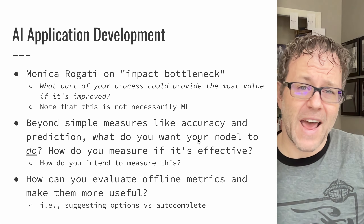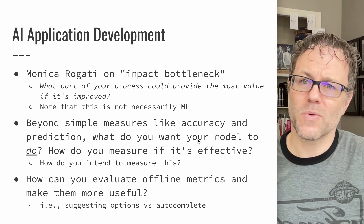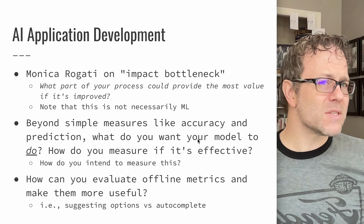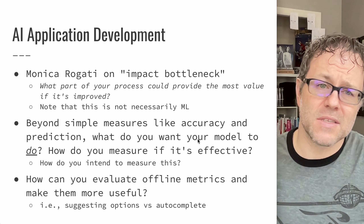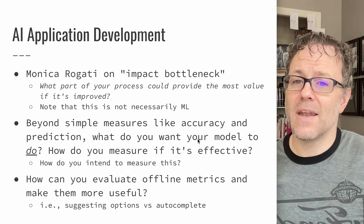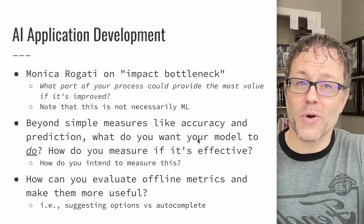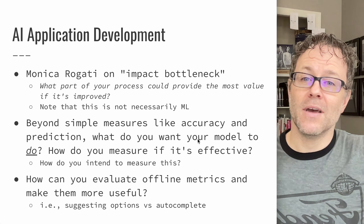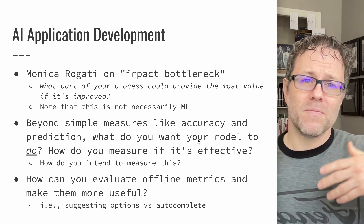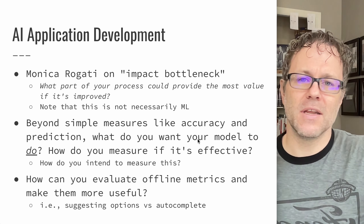Beyond your simple measures, you've got accuracy for your prediction. What do you want your model to do? How do you know if it's effective? This is an important question to ask as you're developing, because your model may be accurate only in certain situations. That doesn't mean it's useless — it just means that maybe you need to put your model into situations where it's successful. How do you actually evaluate what your model does to make it useful? For example, you could auto-complete things that people are entering, but you could also just suggest different options. Sometimes one of those is going to be more effective than the other. So it's really about being able to pivot and react to what your model does so that you can effectively integrate it into your applications.